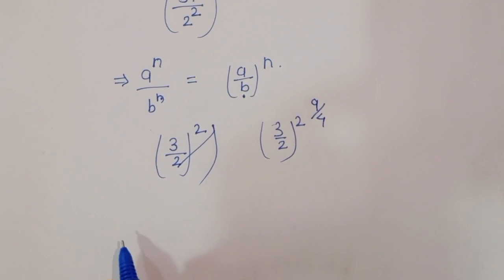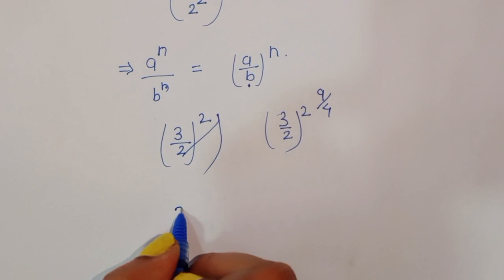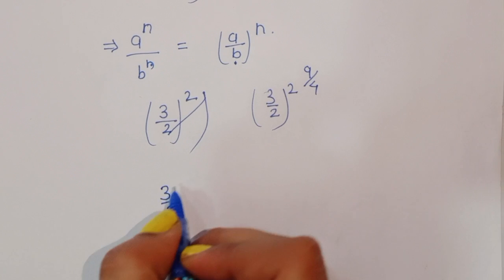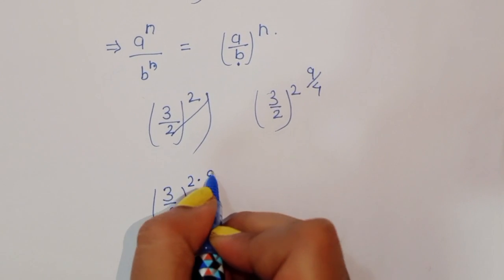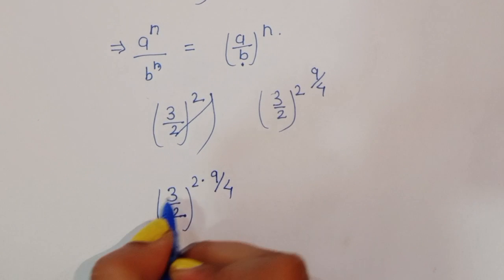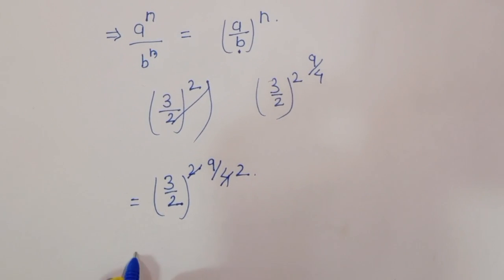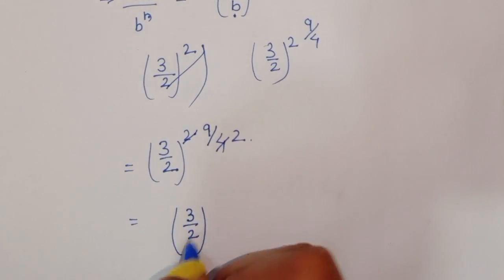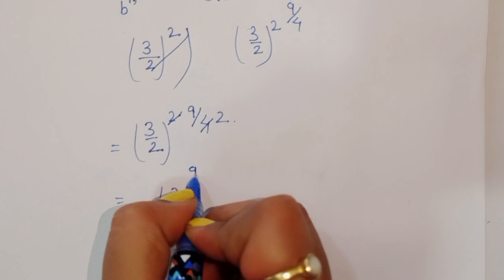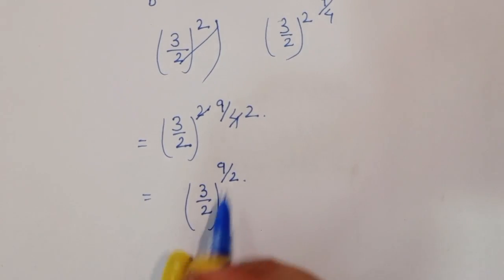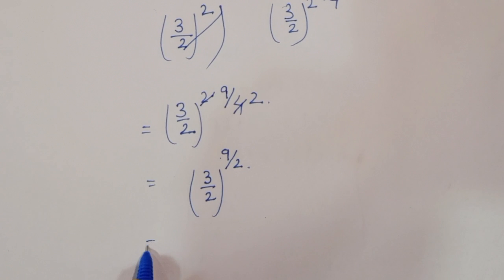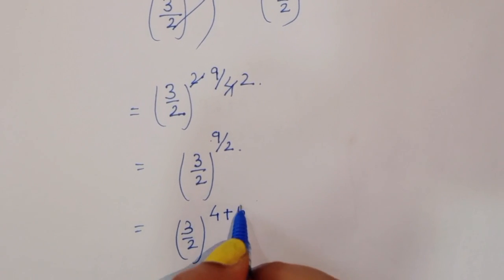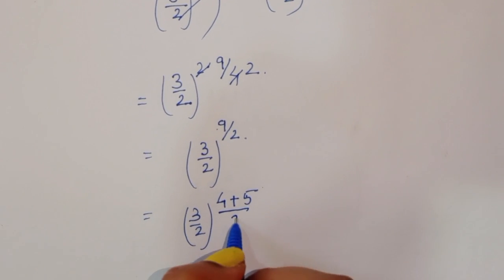So we have 3 divided by 2, and we multiply the exponents: 2 times 9 over 4. Now 2 times 9 over 4 gives 9 over 2. So we get (3 divided by 2) raised to the power 9 over 2. Now we can write 9 over 2 as 4 plus 5 over 2, that is 4 over 2 plus 5 over 2.